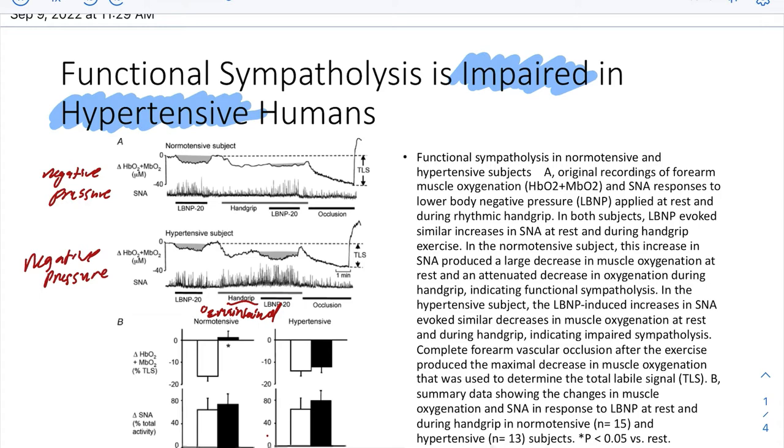So looking right here, we're looking at how functional sympatholysis is impaired in hypertensive individuals, and we're looking at their blood flow. So we add negative pressure here at the beginning, and we see both normotensive and hypertensive patients have a drop in blood flow, which is normal because of that sympathetic nervous system activation. Then we add some hand grip exercises, and we try it again. And so this time, when we add the negative pressure,